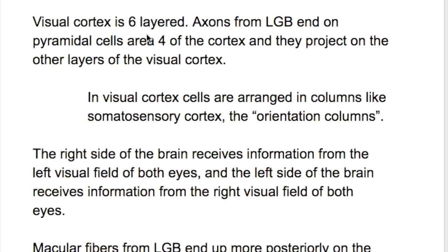The visual cortex has six layers. Axons from the lateral geniculate body end on the pyramidal cells in layer 4 of the cortex, and they project onto the other layers of the visual cortex.